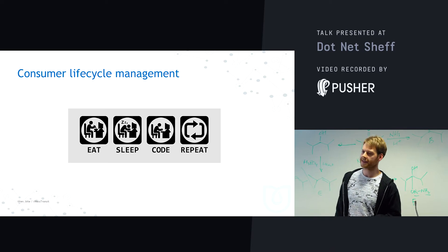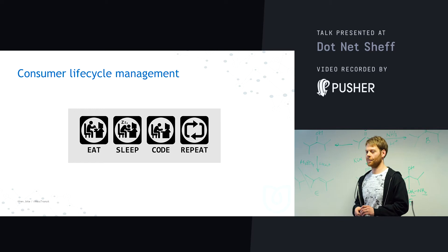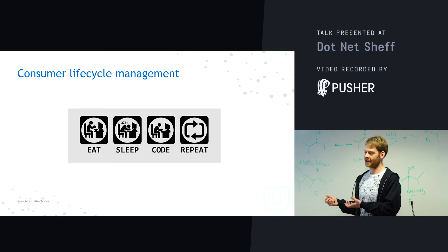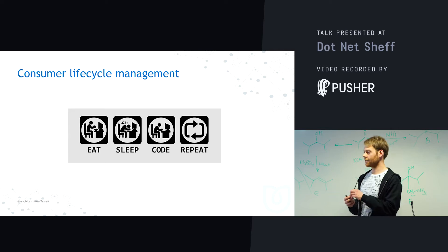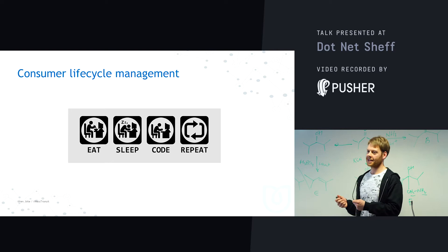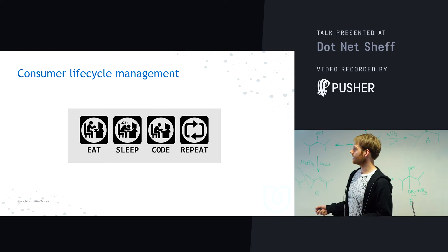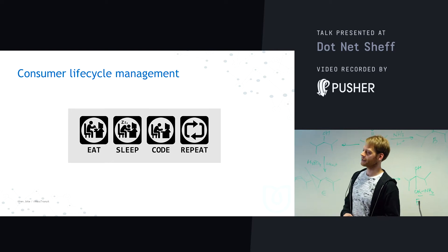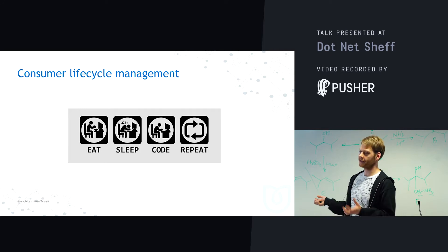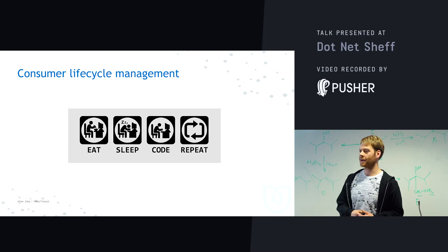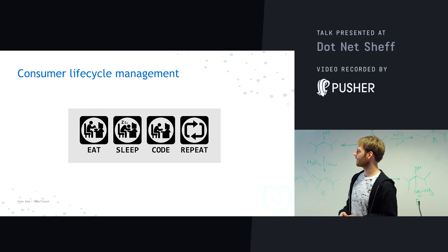Consumer lifecycle management is similar to how Web API works. If you've got an IoC container and you call an action on the Web API, it creates everything it needs to process the request, and once it goes out of scope it destroys everything. It's very similar for the consumer — everything you need to inject is built up, and afterwards it disposes and clears everything up for you.